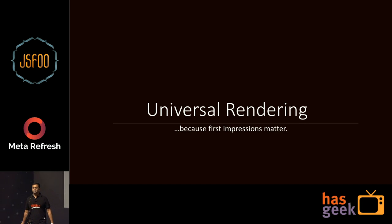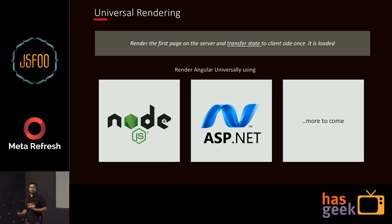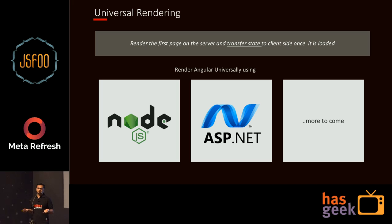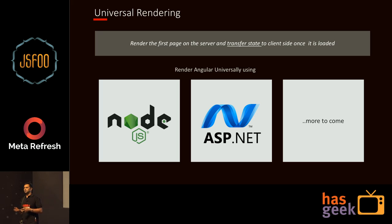And universal rendering. There have been enough talks about universal rendering — I'm not going to touch on the need for it. I'm going to talk about how Angular is helping you with that. Universal rendering is about rendering on the server and transferring the state to the client side. In Angular, you do that using Angular Universal, which is primarily a Node-based application — you can do it using Node, but also in ASP.NET, and there are talks about doing it in Java.